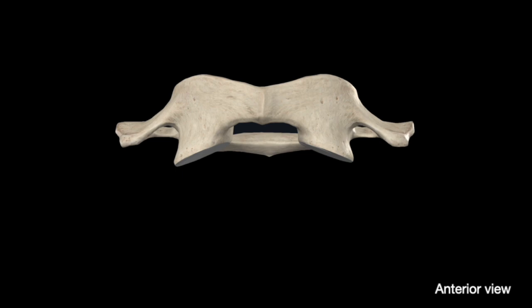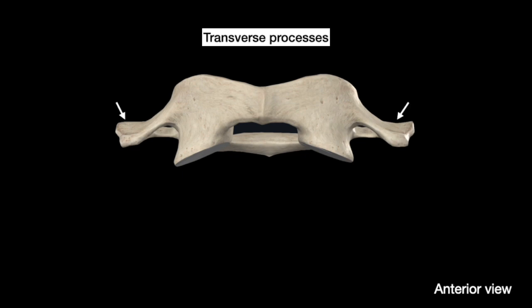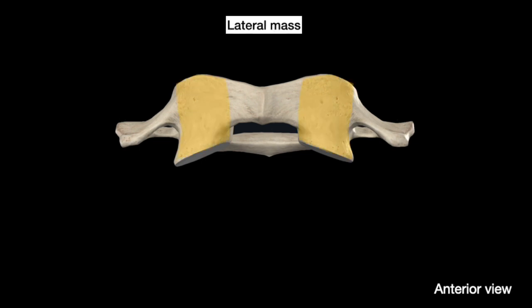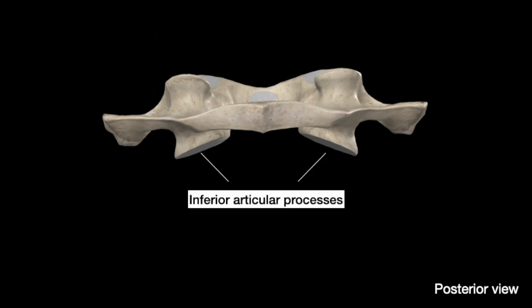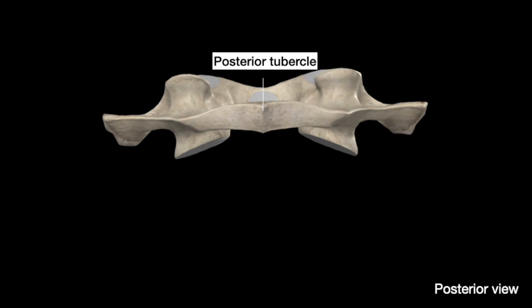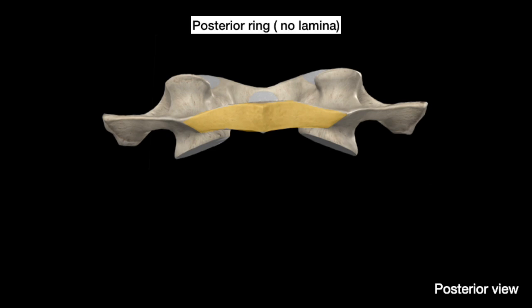From the anterior view, in the center of the anterior arch the anterior tubercle is seen; laterally the transverse processes are seen, and between them and the anterior arch are the two lateral masses. From the posterior view, at the top of the lateral masses is the superior articular surface, and inferiorly the articular process that articulates with the superior articular process of C2. In the middle of the posterior arch is the posterior tubercle. Notice there is no lamina in C1 — that is a unique feature of C1.